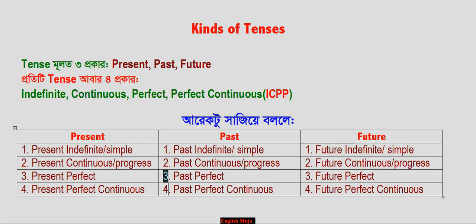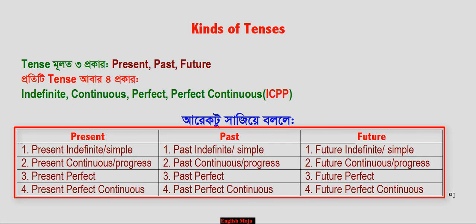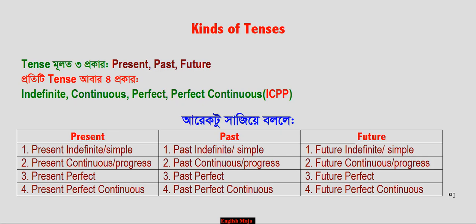Future: Number 1 is Future Indefinite — also called Future Simple. Number 2 is Future Continuous — also called Future Progressive.